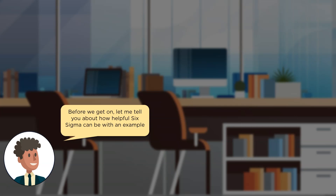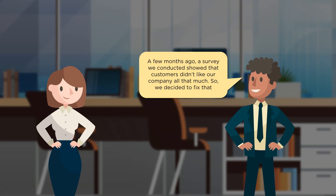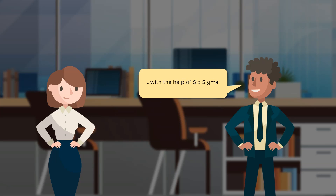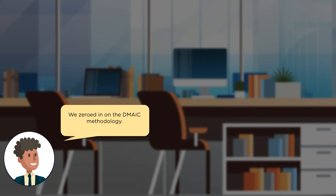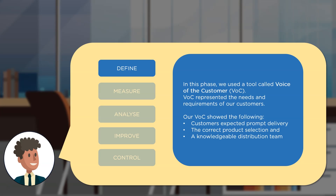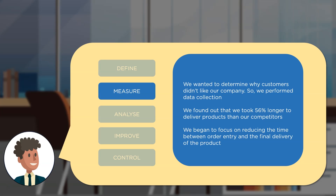Before we go on, let's talk about how Six Sigma was used in reference to the earlier example — the situation James was facing. A survey indicated that customers weren't happy with the organization, so they decided to fix that with Six Sigma using the DMAIC methodology. In the Define phase, they used a tool called the Voice of the Customer, which represented customer needs and requirements. This showed that customers expected prompt delivery, correct product selection, and a knowledgeable distribution team. In the Measure phase, the company performed data collection and found they took 56% longer than other companies to deliver their product, so they decided to reduce the time between order entry and product delivery.